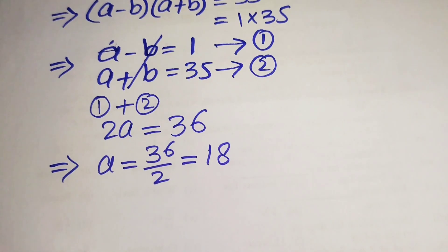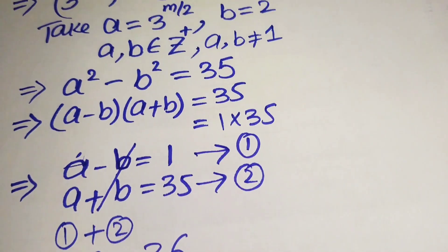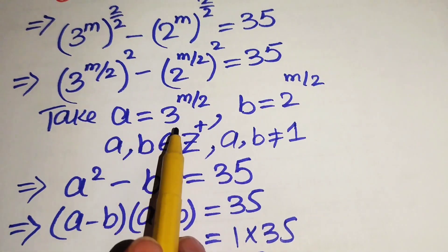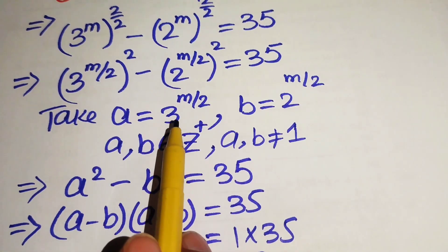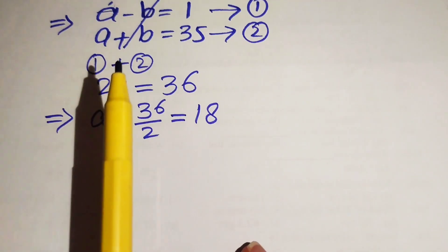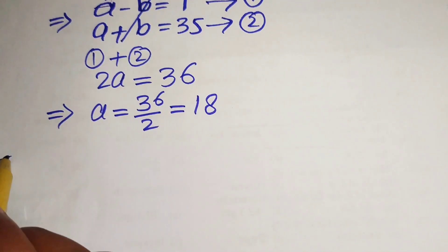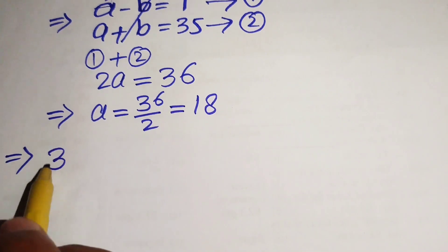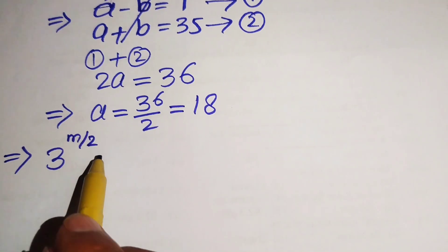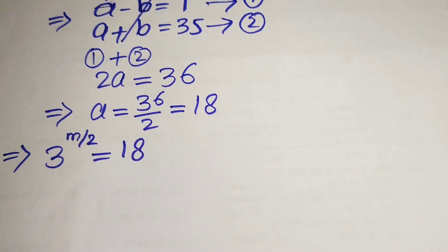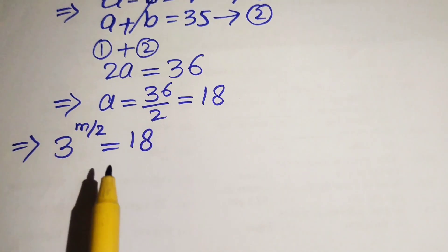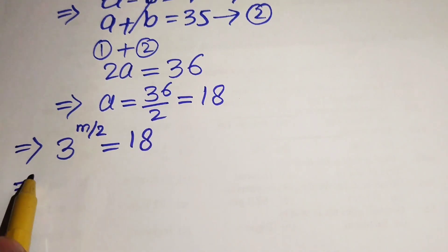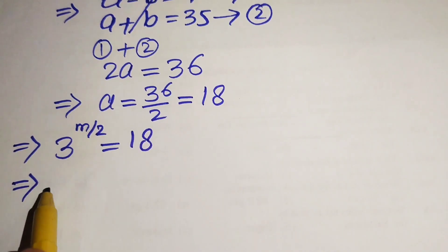We know that a equals 3 to the power of m over 2. Back-substituting gives 3 to the power of m over 2 equals 18. To find m, we now take the log of both sides.